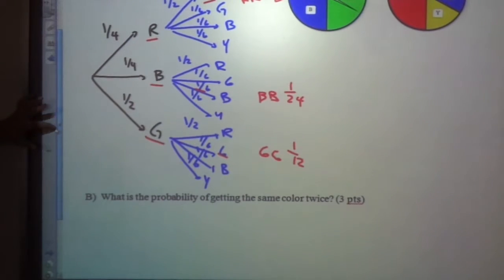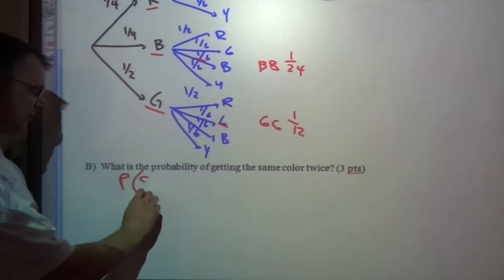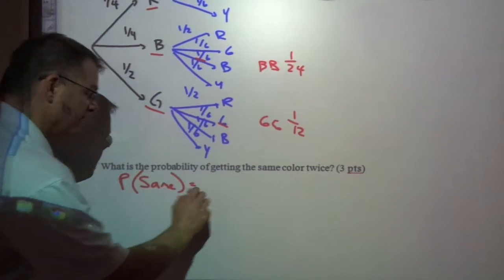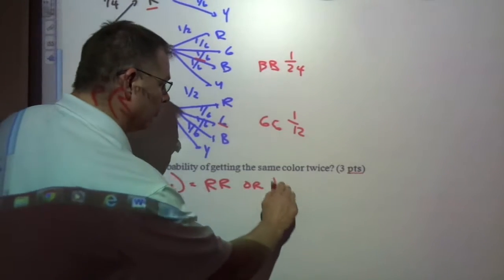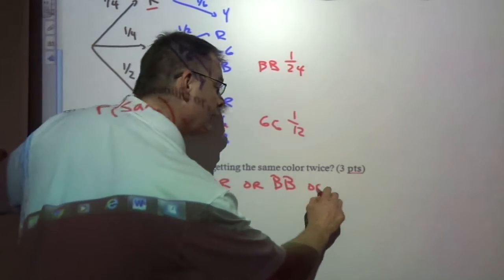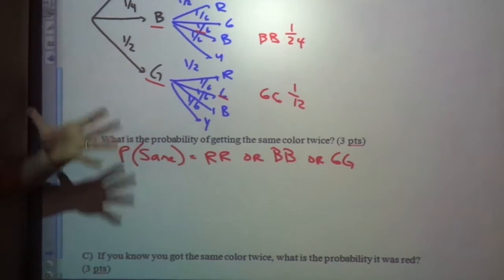But the problem asks, what's the probability of getting the same color twice? So really, what that's asking, probability of the same, is really, it could happen with red, red, or blue, blue, or green, green, right?